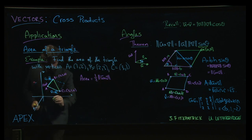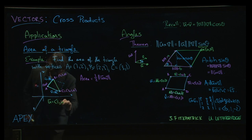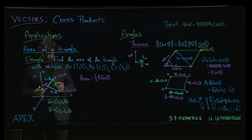So, let's figure out what those vectors are. u, again, we do head minus tail, so 2 minus 1 is 1, 3 minus 2 is 1, 0 minus 0 is 0. 1, 1, 0. v, again, head minus tail, so 3 minus 1 is 2, 1 minus 2 is negative 1, 0 minus 0 is still 0.